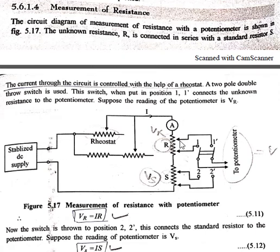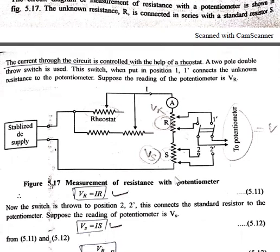The circuit diagram shows measurement of resistance using the potentiometer. Here R is an unknown resistance connected in series with the standard resistance S. The current in the circuit is controlled with the help of a rheostat. A double pole double throw switch is used for measuring voltage across R and the standard resistance S.